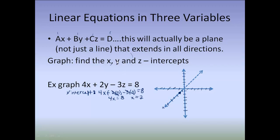Then I'm going to go back and I'm going to find my Y intercept. And I do that by setting my X and my Z to 0 this time. When I do that, I end up with 2Y equals 8 and I get Y is equal to 4. So, then I'm going to go over here and I'm going to plot 4 on my Y axis.